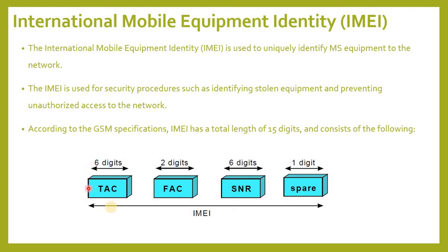The IMEI consists of the following: TAC — Type Approval Code, determined by a central GSM body; FAC — Final Assembly Code, identifies the manufacturer; SNR — Serial Number, an individual serial number of six digits that uniquely identifies all equipment within each TAC; and a Spare digit for future use — when transmitted by the MS this digit should always be zero.